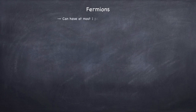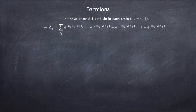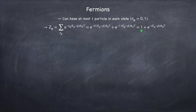Let's start with fermions. The occupation number can be at most one for each momentum state, meaning n_p can be either zero or one — not accounting for degeneracy. Writing down our expression for Z_p as the sum of Maxwellian weights over all occupation numbers, we only have n_p = 0 and n_p = 1. Since e to the zero is one, and then we're left with the second term, that gives us Z_p for a given momentum state for fermions.